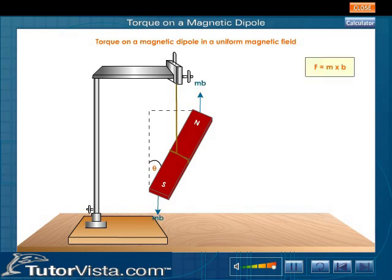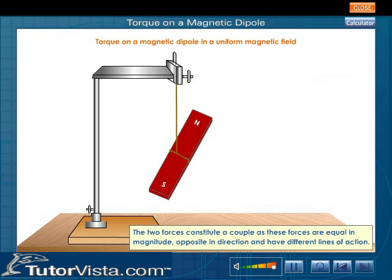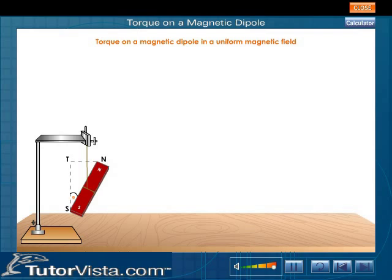If F is the magnitude of the force acting on each pole of the dipole then F is equal to M into B. The two forces constitute a couple as these forces are equal in magnitude, opposite in direction and have different lines of action. If Tau is the moment of the couple then Tau is equal to F into NT.